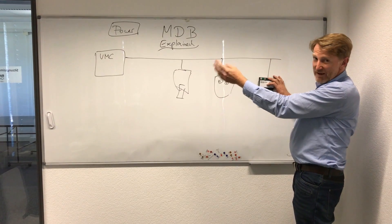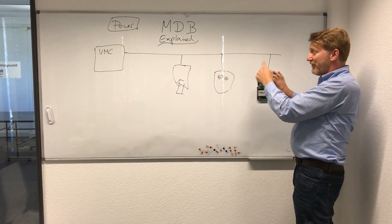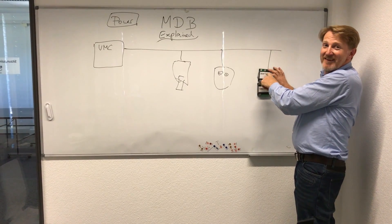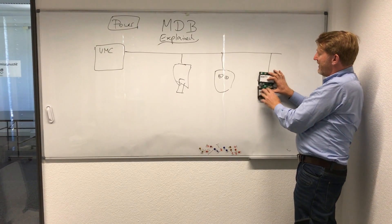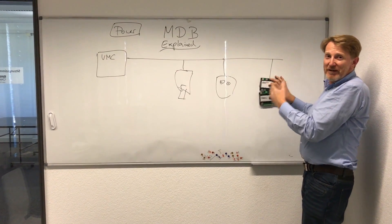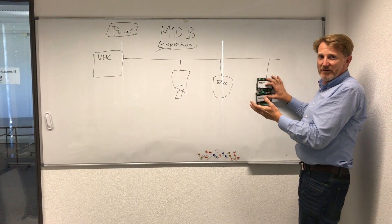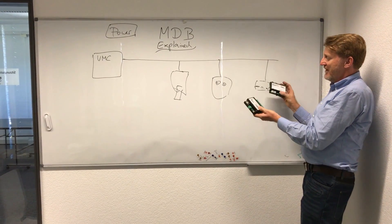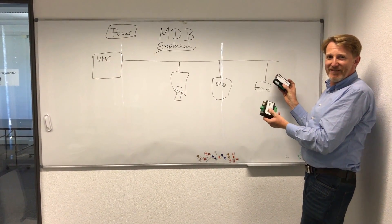A vending machine of any type talks to these peripherals, and at one point it also talks here and says: do you have money? Is somebody holding their mobile in front, or whatever? And this controller here, through that interface, goes back to the vending machine to give the credit needed to dispense the product. That's it. Thank you for listening, and I hope you understand a little bit more about MDB and the credit rules you can use. Thank you.